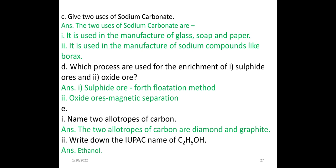Which processes are used for the enrichment of sulphide ore and oxide ore? For sulphide ore, the froth flotation method is used; for oxide ore, magnetic separation is used. Name two allotropes of carbon. The two allotropes of carbon are diamond and graphite. Write down the IUPAC name of C2H5OH — it is ethanol.